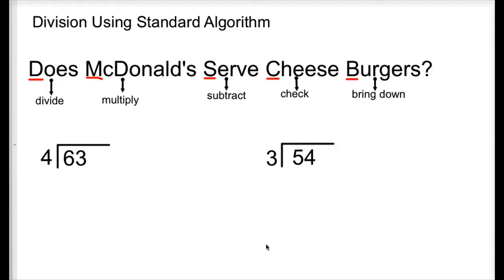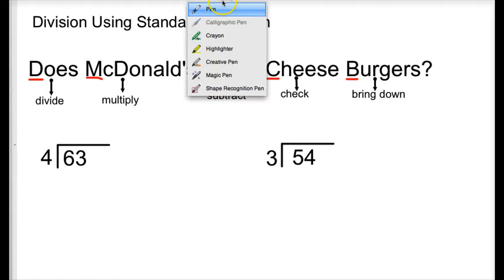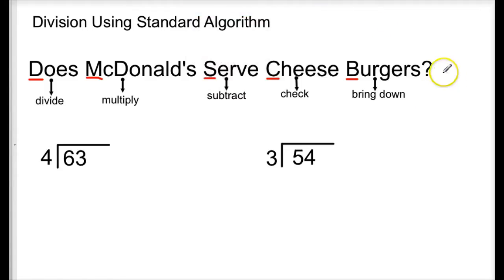I like to use this acronym: Does McDonald's Serve Cheeseburgers? So what we are doing is looking at dividing, multiplying, subtracting, checking, and bringing down numbers. We are going to follow those steps when we are dividing. The acronym is divide, multiply, subtract, check, and then bring down — DMSCB.